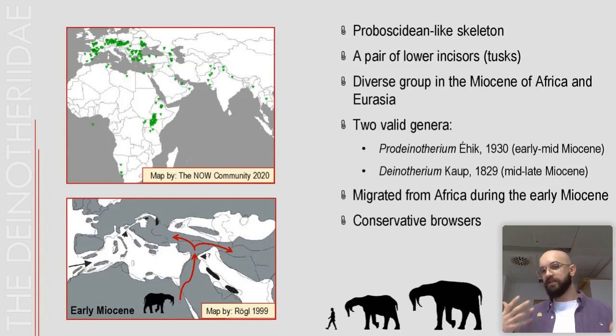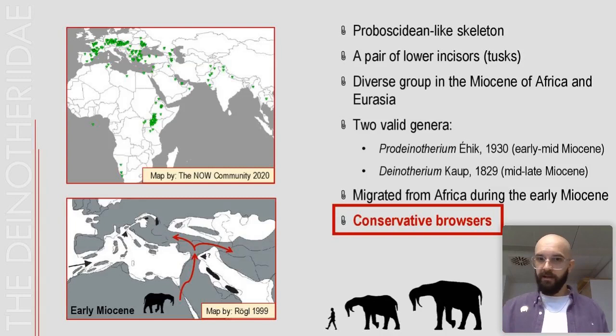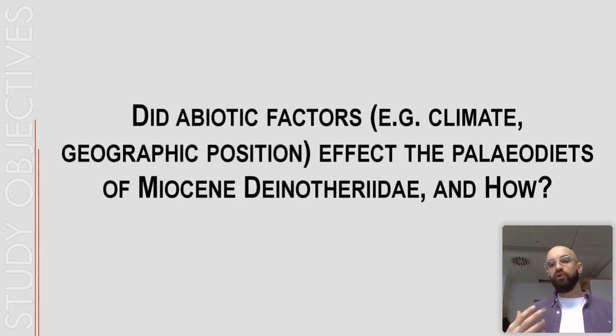Dinotheridae migrated from Africa towards Eurasia during the early Miocene through a natural corridor known as the Gomphotherium land bridge, and brief palaeocological analysis showed that Dinotheridae were conservative browsers — meaning these animals were feeding on soft leaves and twigs throughout their evolutionary history. However, this implies Dinotheridae were not affected by the dramatic climatic shifts of the Miocene. Therefore the question triggering this study was whether abiotic factors — specifically climate — affected the palaeodiets of Dinotheridae, and if so, how.